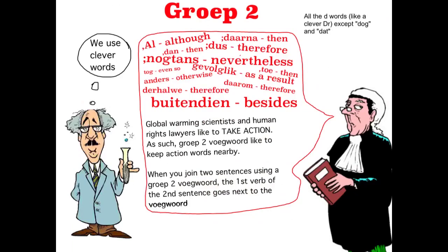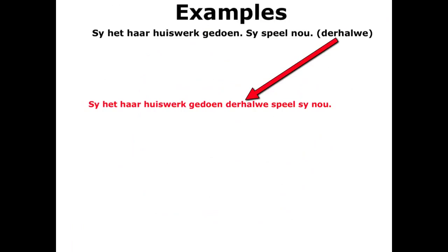Shall we look at an example? So: Sy het haar huiswerk gedoen. Sy speel nou. Verbind met derhalwe. First sentence stays exactly the same: Sy het haar huiswerk gedoen. Then we put down the conjunction, derhalwe — it doesn't have any punctuation attached to it, so we can just put it down immediately. Then we put the first verb close to the conjunction because he likes to take action. So speel comes out of the second sentence, and then the rest of the sentence follows in order: Sy het haar huiswerk gedoen, derhalwe speel sy nou.